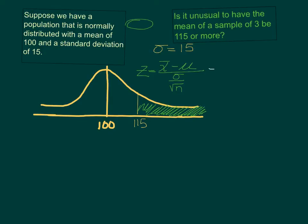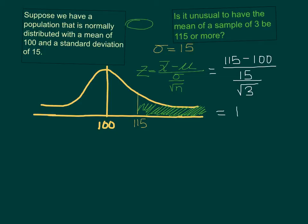So I'm going to plug in those values. I'm going to plug in 115, which is my sample mean of interest. My population mean is 100, divided by my standard deviation of 15 over the square root of n, which is 3 — my sample size is 3. When I do those calculations I get a z-score of 1.73, so this converts to a positive 1.73.